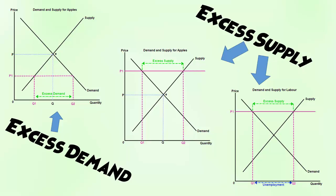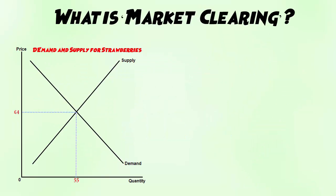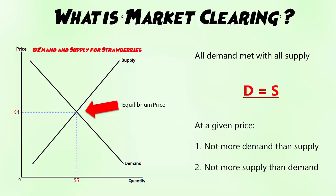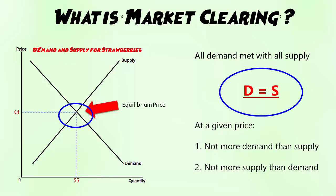So for market clearing we need to know two things. Market clearing is where the equilibrium price in a market is reached — in other words, where all of demand at that price is met by supply at that price, with no leftover demand or supply compared to each other.